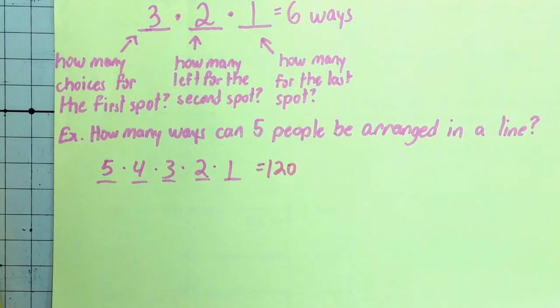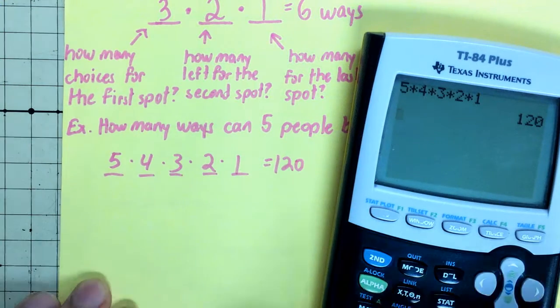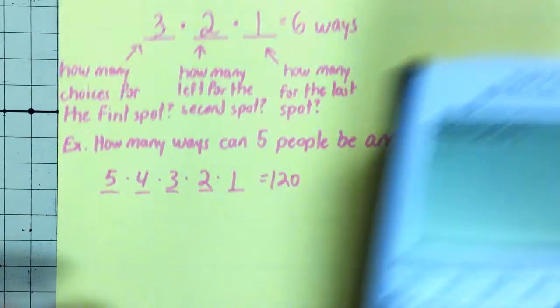Now, what if instead of five people, we had something like 15 people, 20 people, 30 people? Do you want to do 30 times 29 times 28 times 27 times 26 times 25 times 24 times 23 so on and so forth until times two times one and type all that in the calculator? That's too much work. So there is a shortcut to this.